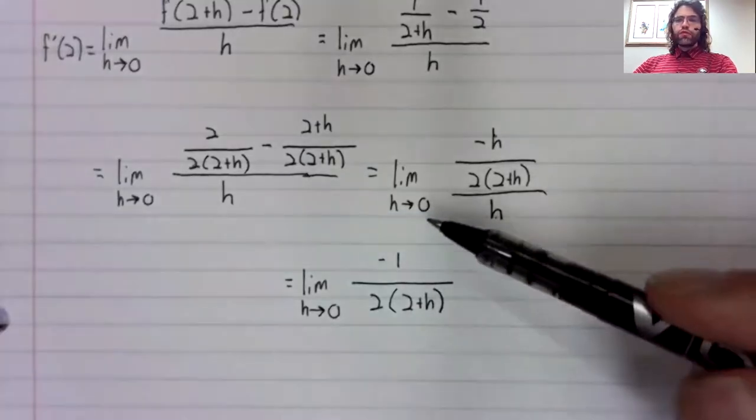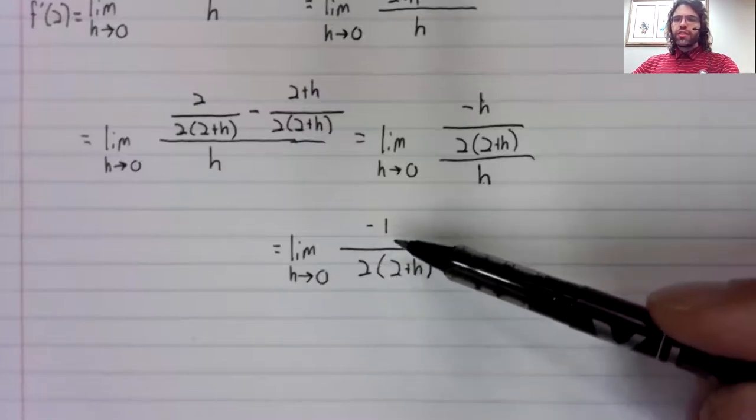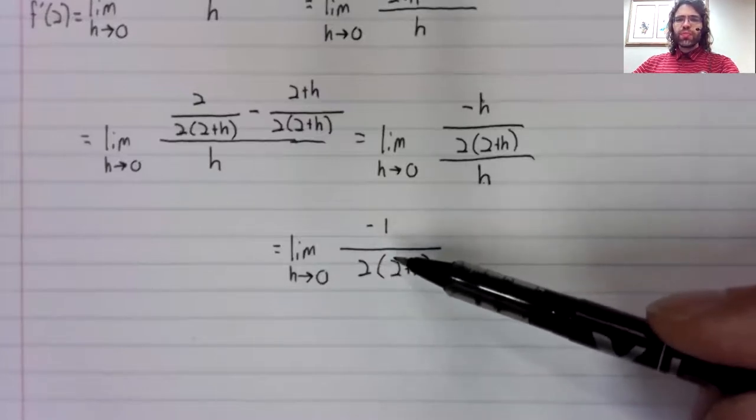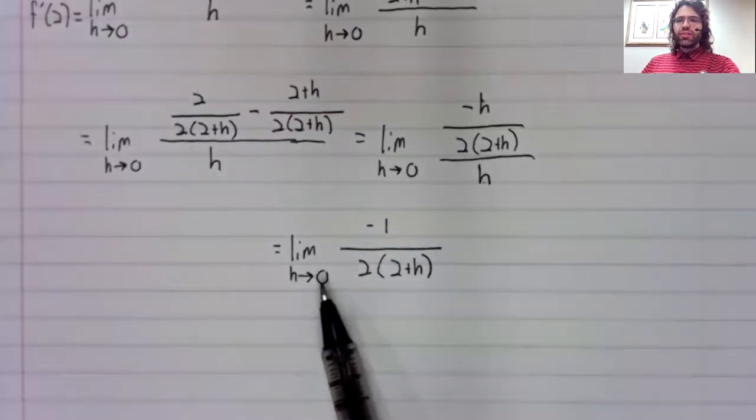And this is a rational expression. Everything here is continuous. If we can let that h be zero, that will give us the limit.